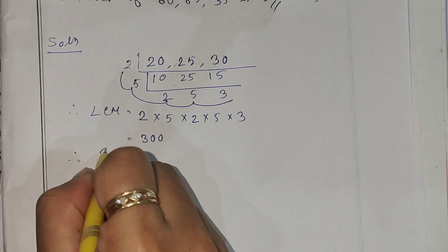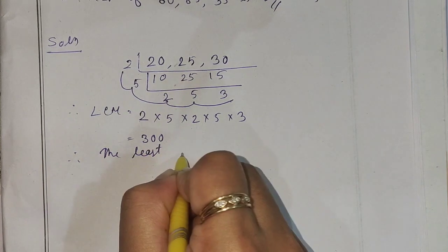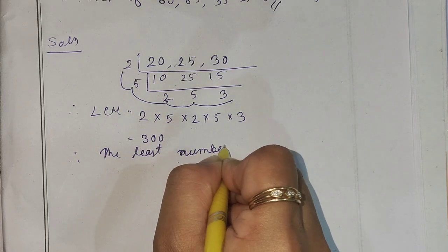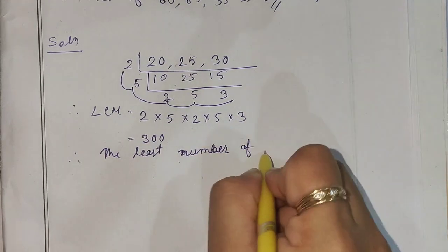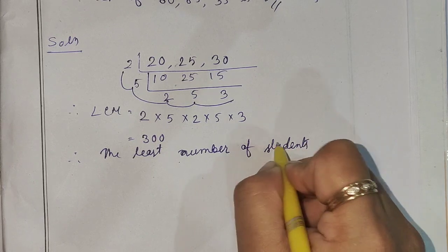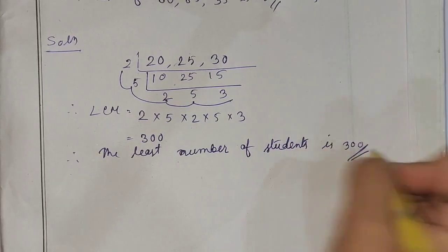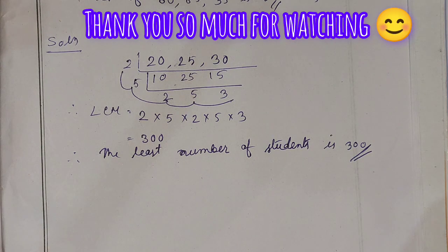The least number of students is 300. That is the most important thing: we have found the least number of students.